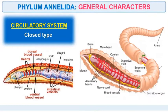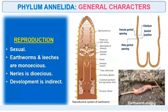The circulatory system is closed-type with dorsal and ventral blood vessels and a heart. Regarding reproduction, they are sexual organisms. Earthworm and leeches are monoecious — meaning both sexes are present in the same organism — whereas Nereis is dioecious, meaning male and female organisms are different. Development is indirect.